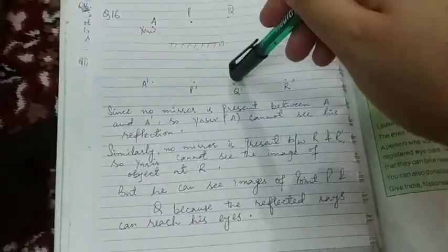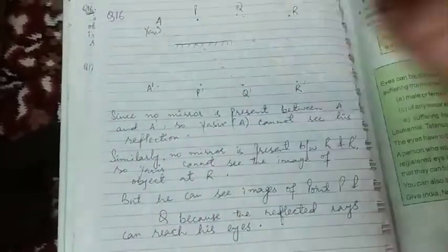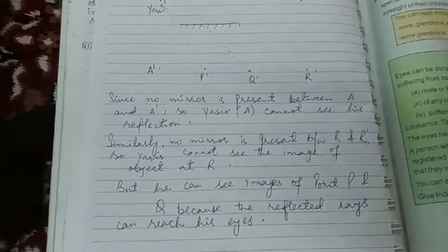But he can see the images of points P and Q because the reflected rays can reach his eyes. If you just see here, these are the reflected rays that can reach his eyes, so he can see them.